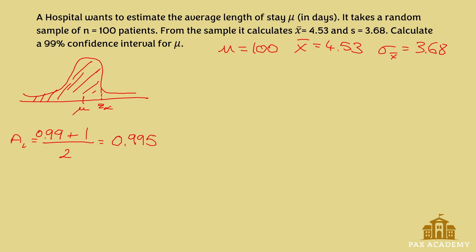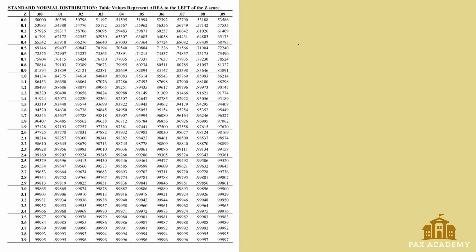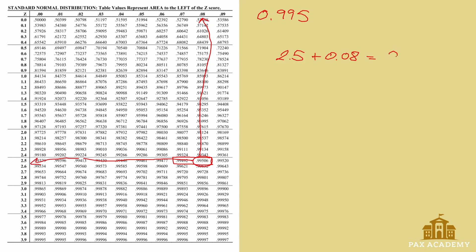Now that we know the area to the left is 0.995, we go back to the positive z-score table to find the z-value. 0.995 falls between two values in the table, and we choose the one closest to 0.995. Going horizontally we get 2.5, and then adding 0.08 vertically gives us a z-value of 2.58.